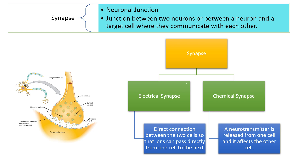Now, what is a synapse? A synapse is a neuronal junction — a junction between two neurons or between a neuron and a target cell — where they can communicate with each other. Synapses can be of two types: electrical synapse and chemical synapse. In an electrical synapse, there is a direct connection where ions pass directly from one cell to the next without any medium — this occurs when the gap between two neurons is very small. Chemical synapse is more common; here a neurotransmitter is released from one neuron and transmitted to the second neuron, passing the neural impulse from one neuron to the next.